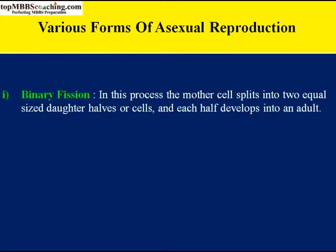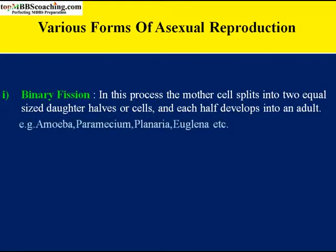The first form is binary fission. As the name denotes, 'bi' means double. In this process, the mother cell splits into two equal-sized daughter cells and each half develops into an adult. The parent organism is replaced by two daughter organisms because it literally divides into two. Binary fission occurs in amoeba, paramecium, planaria, euglena, etc.